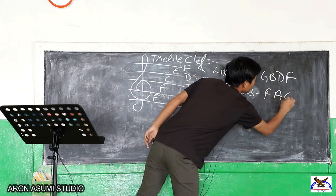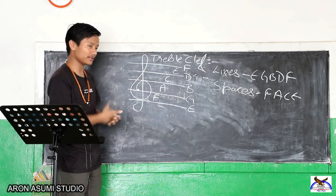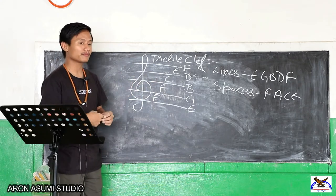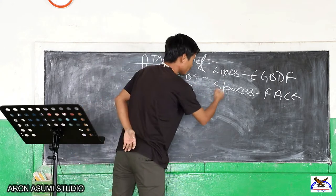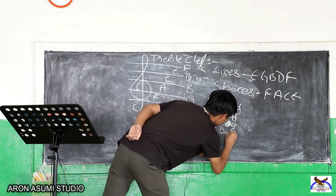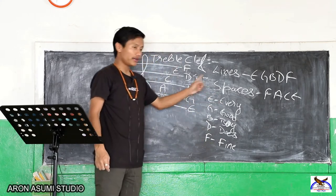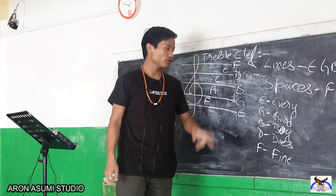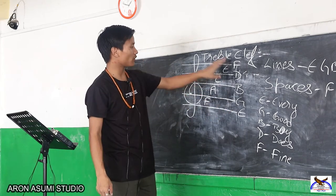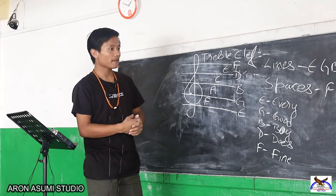FACE is easy to remember since it's a word you already know. But EGBDF can be tricky, so we have a mnemonic: Every Good Boy Does Fine. If you cannot remember EGBDF, remember 'Every Good Boy Does Fine' — that abbreviation will help you recall the names of the lines of the treble clef.